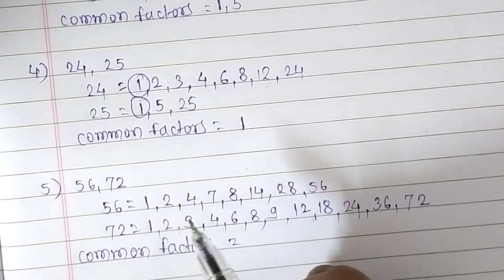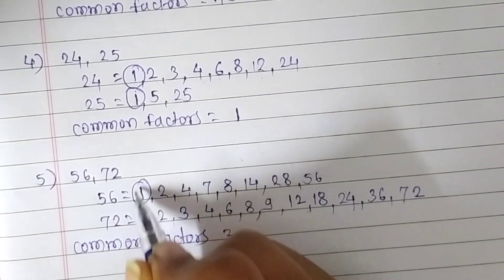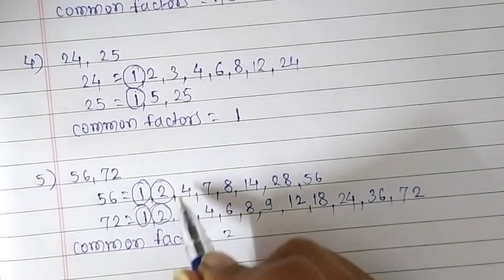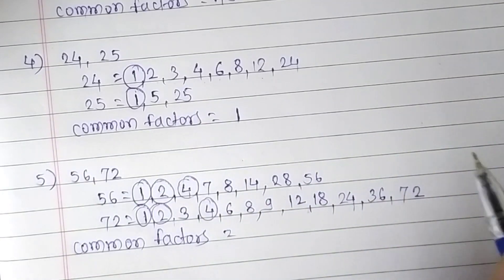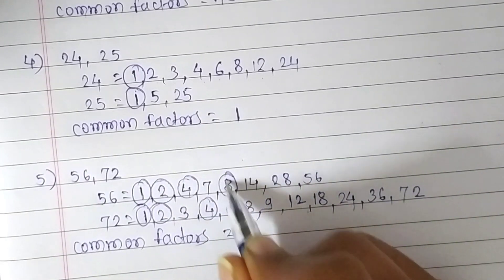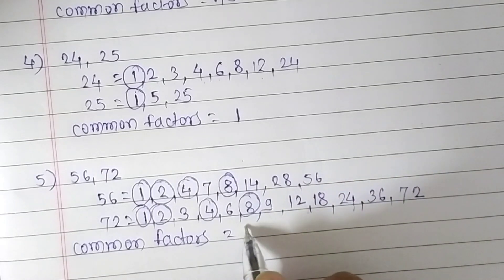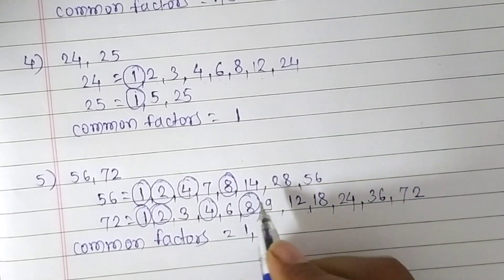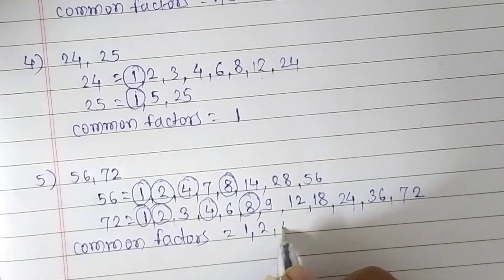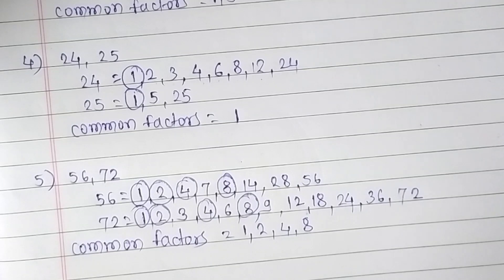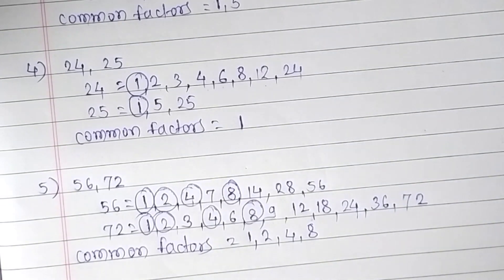Now let's find the common factors of 56 and 72. We can see 1 is a common factor, then 2, then 4, then 8 is also a common factor. There is no other common number. So the common factors of 56 and 72 are 1, 2, 4, and 8. This is the solution of practice set 23.